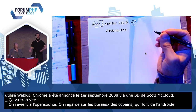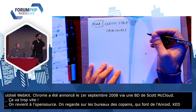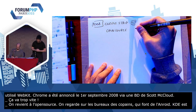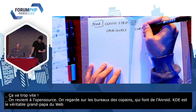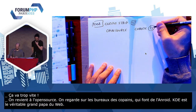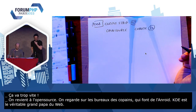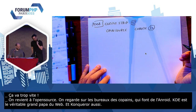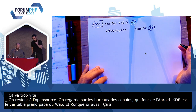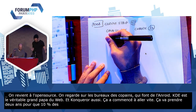Et donc, c'est pour ça que KDE, et Konqueror surtout, est le véritable grand-papa du web. Il y a deux fans de Konqueror dans la salle, ça fait plaisir. Et donc là, ça va commencer à aller vite. Ça va prendre deux ans pour que 10% des utilisateurs d'IE passent à Chrome, trois ans, dix de plus.